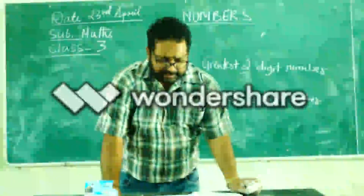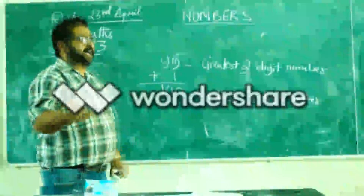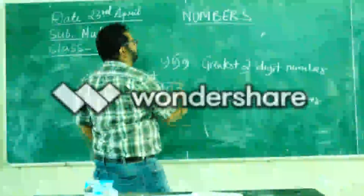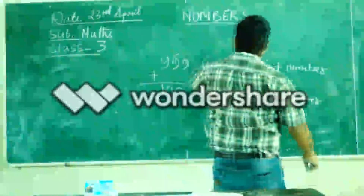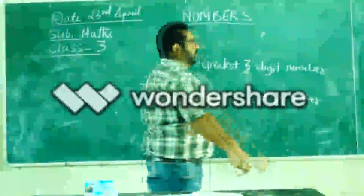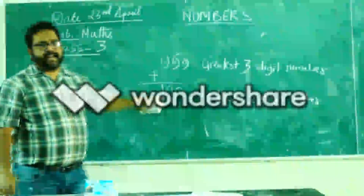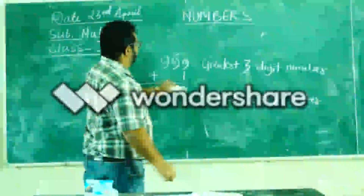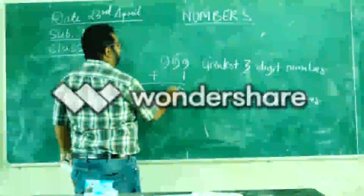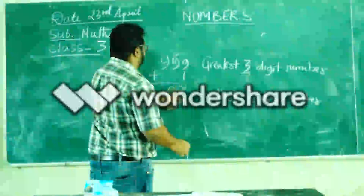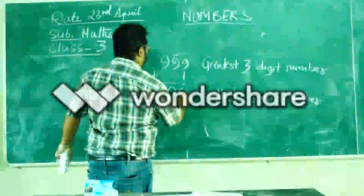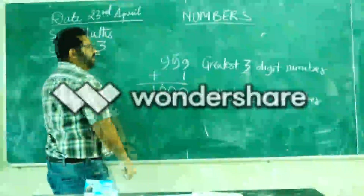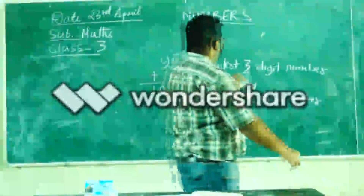Similarly, when we have the largest three-digit number — that is 999 — and we add 1 to it, we get 0, 0, 0, and then 1, giving us the smallest four-digit number.